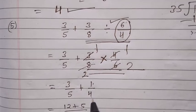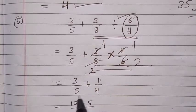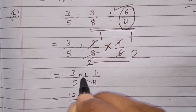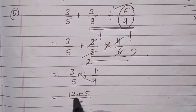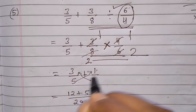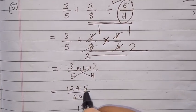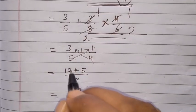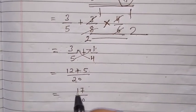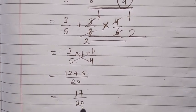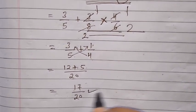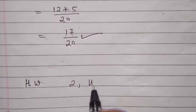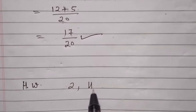Now we have 3 upon 5 plus 1 upon 4. Cross multiply: 4 × 3 = 12, 5 × 1 = 5, and 5 × 4 = 20. So 12 plus 5 upon 20 = 17 upon 20. The answer is 17 upon 20. Your homework: question number 2 and 4. Thank you very much.